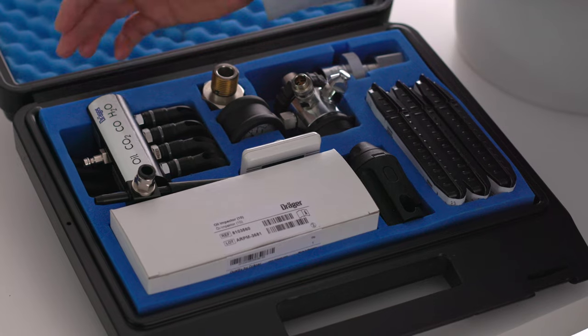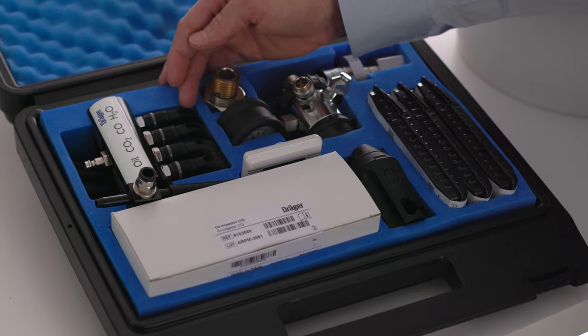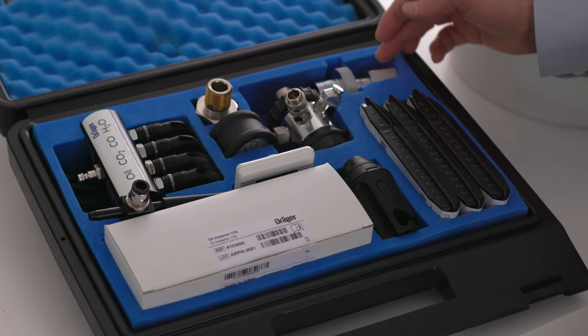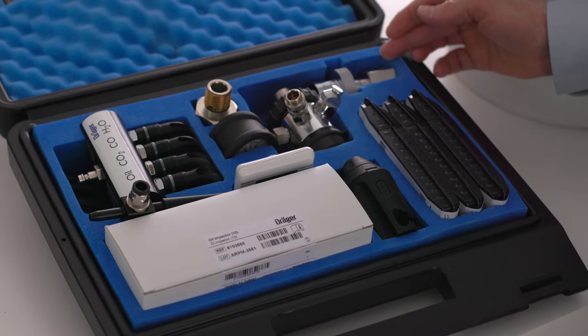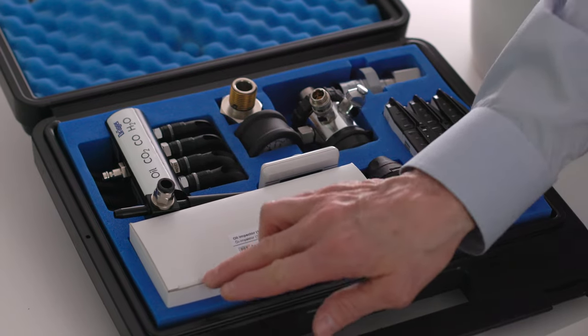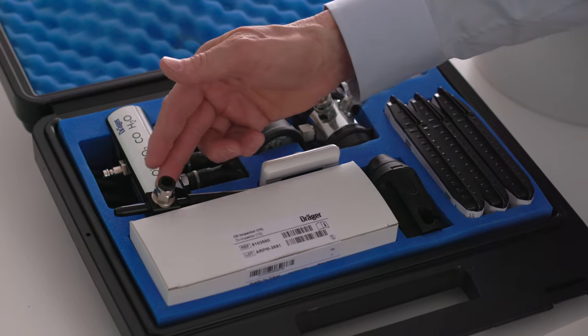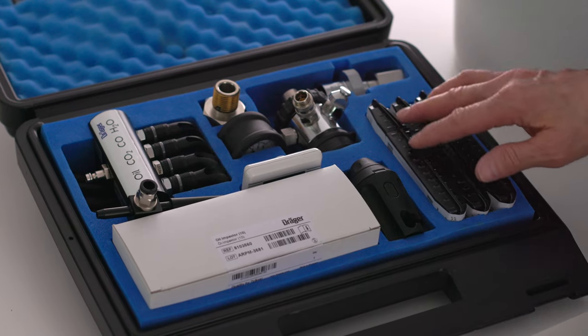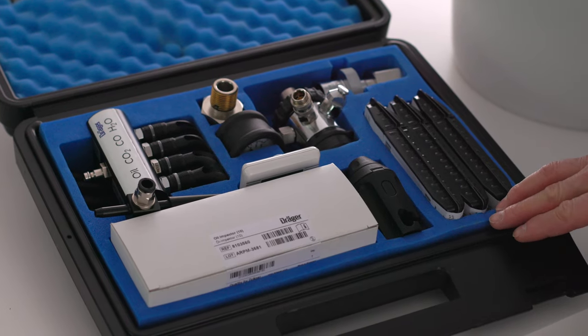When you open the kit, you will see the measuring device with the flexible tube holders, high-pressure reducer, CGA347 adapter for the SCBA cylinders, a timer, a package of oil impactors, impactor adapter, a tube opener, and carbon dioxide, carbon monoxide, and water vapor Draeger tubes.